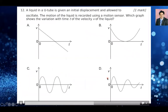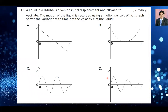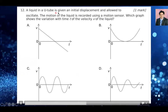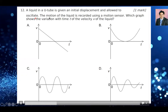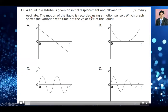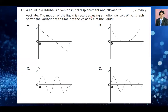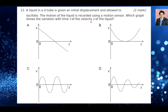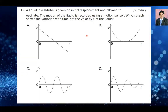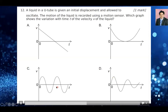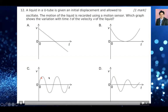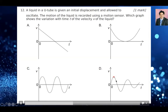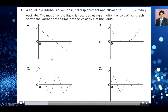Question number 12 is about simple harmonic motion — a liquid in a U-tube is given an initial displacement and allowed to oscillate. The motion is recorded using a motion sensor. Which graph shows the variation with time T of the velocity V? This question is about damping. As damping takes place, the velocity amplitude keeps on decreasing. Option D is the right answer. Options where the amplitude stays the same are incorrect, and A and B are also eliminated.